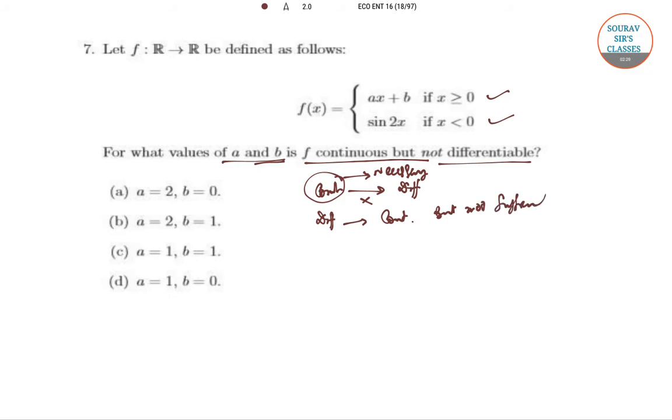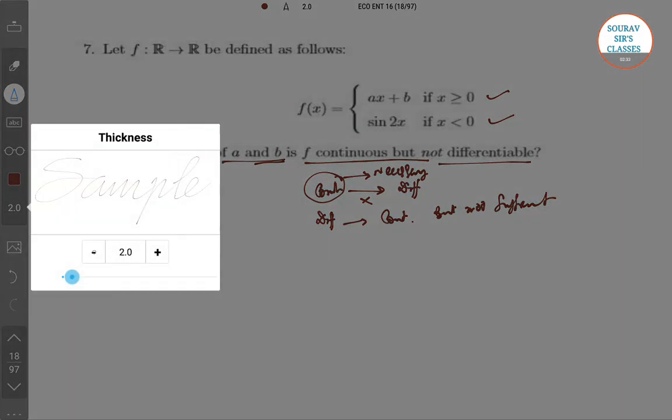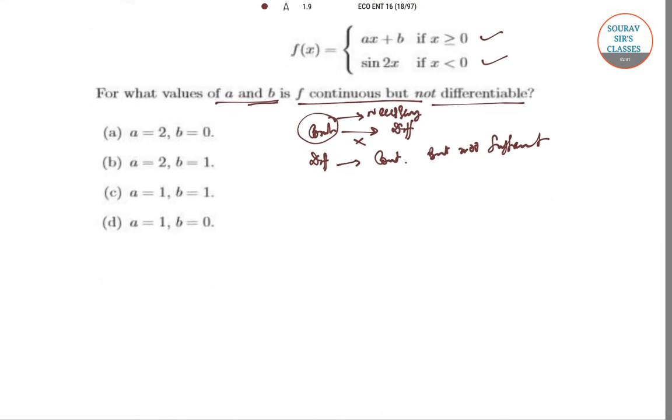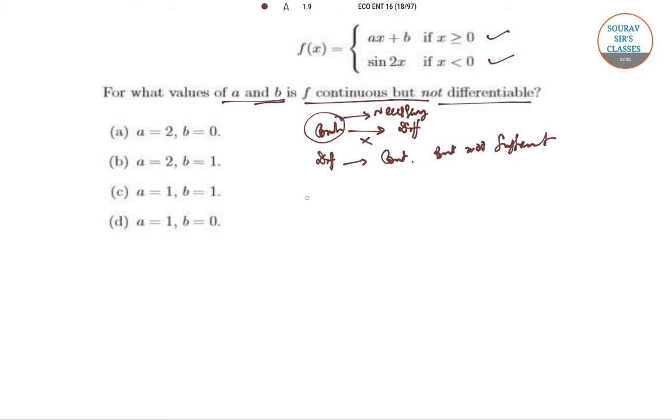So continuity is a necessary condition for differentiability but not sufficient, whereas differentiability is a sufficient condition for continuity. Now coming to this question, limit of x tends to 0 minus, so b equals 0. We take b equals 0 for f(x) to be continuous at x equals 0.